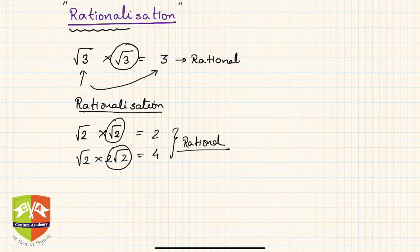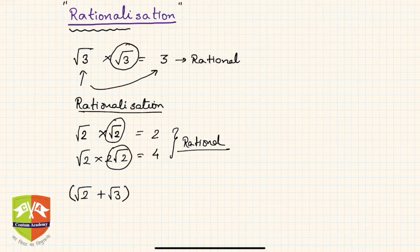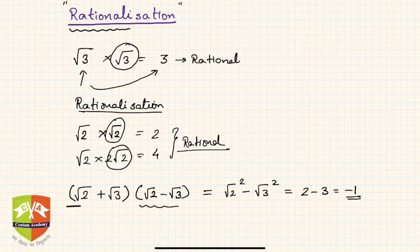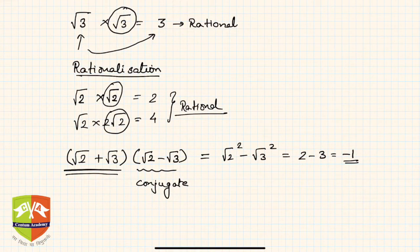Now let's take an example of a compound surd. If I have root 2 plus root 3, I want to rationalize it. I multiply it with root 2 minus root 3. Multiplying these gives root 2 squared minus root 3 squared, which is 2 minus 3, hence minus 1 — a rational number. This surd that was multiplied with the original surd is called the conjugate surd.